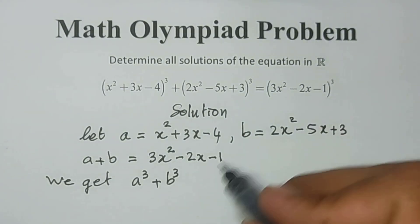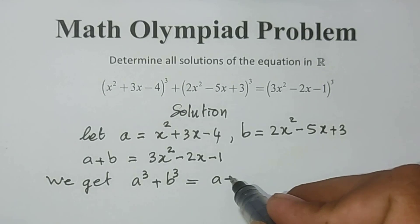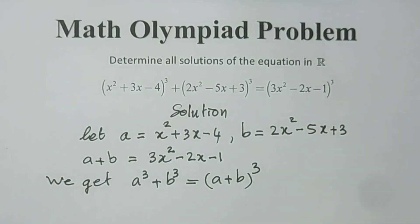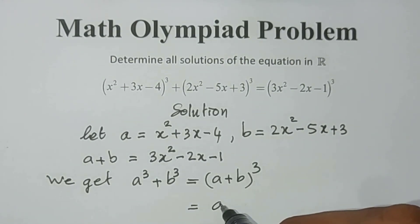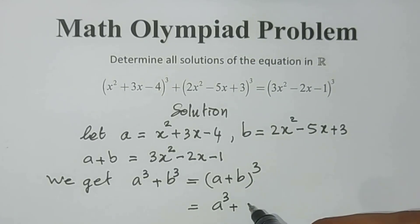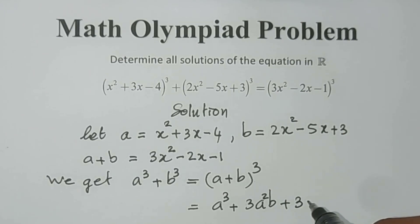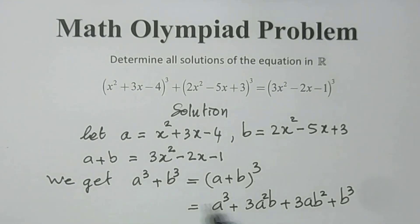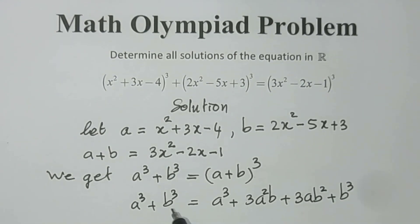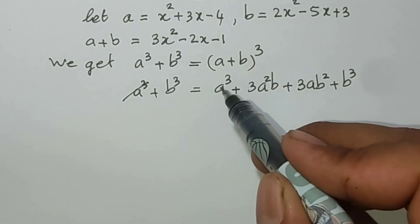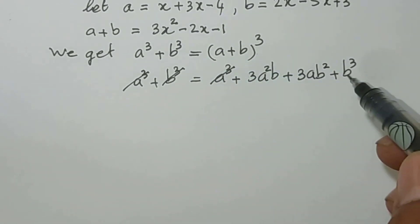Now we expand (A + B)³ to get A³ + 3A²B + 3AB² + B³. We know the left side is A³ + B³, and we can cancel A³ and B³ from both sides.